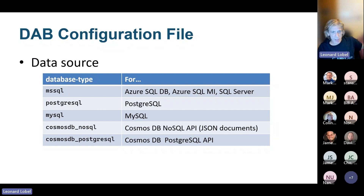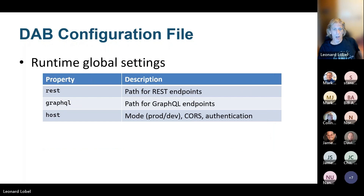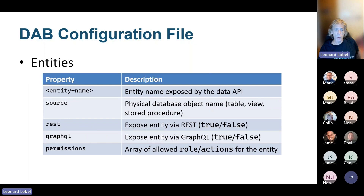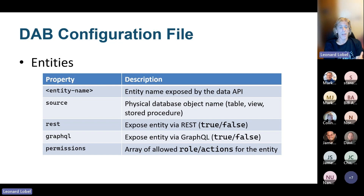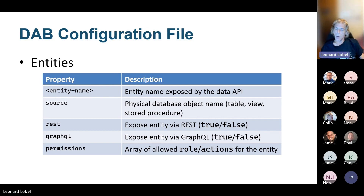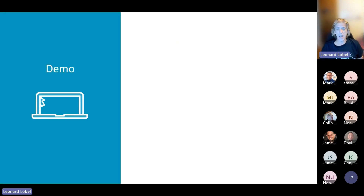These are the supported data sources — Postgres, MySQL, etc. REST and GraphQL are the main sections of the configuration file. For each entity, you have an entity name — that's the name exposed by the API — and a source, which is the physical name of the table, view, or stored procedure. REST and GraphQL can also be controlled at the entity level, as well as permissions.